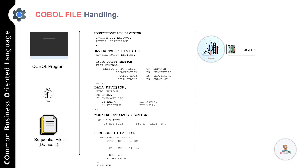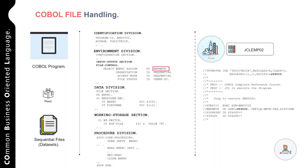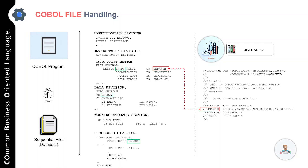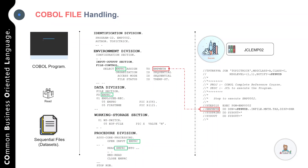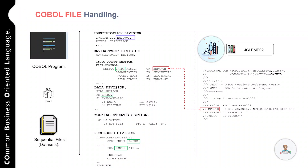Then you have the working storage section, which is generally used to specify the variables that you will be using in your COBOL program. After that we have the procedure division, which is used to specify the business logic. In the procedure division we have a paragraph called 800-CORE-PROCESSING, and the file specified in the file control section and the layout specified in the data division are processed here.